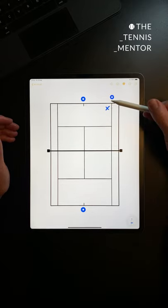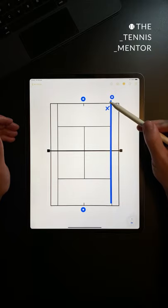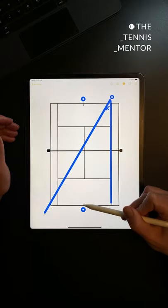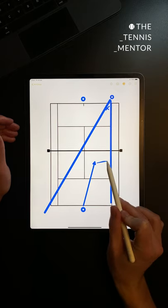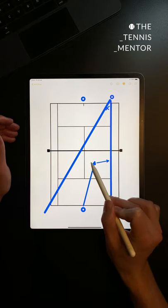Their two best options to pass you would be to hit straight down the line or to hit an angle cross court. So by following the direction in which you hit the ball, you're going to cover both of those angles equally.